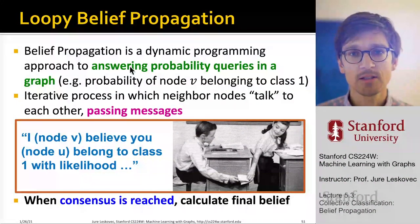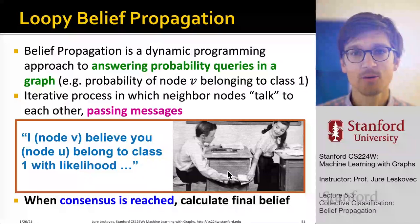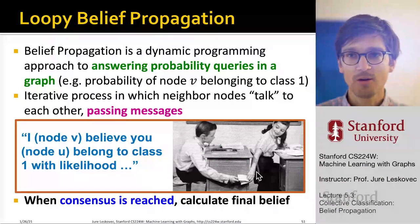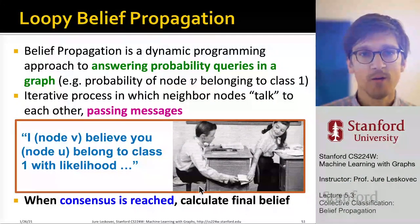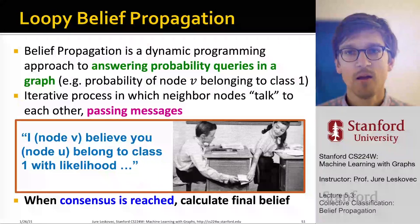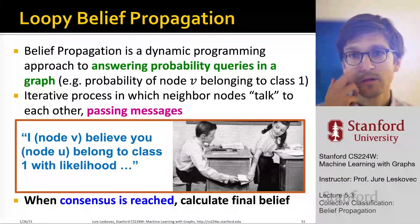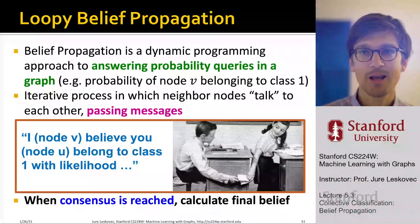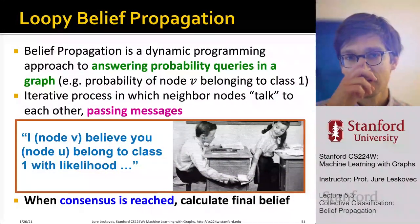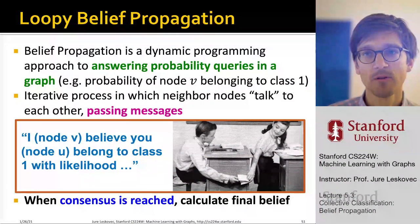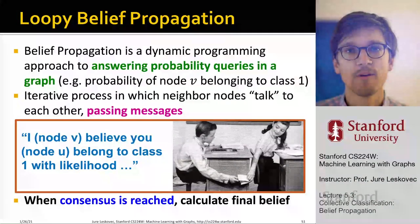Think of it this way: node V will say, I believe you belong to class 1 with the following likelihood. A given node can then collect these beliefs from its neighbors and say, this makes me more or less sure I also belong to class 1. When consensus is reached as messages are passed around, we arrive at the final belief about the class or label of every node in the network.